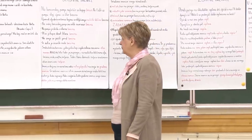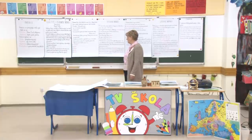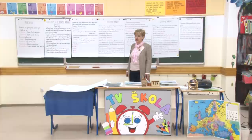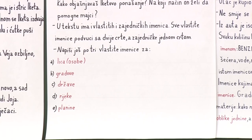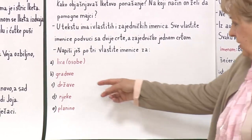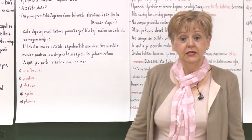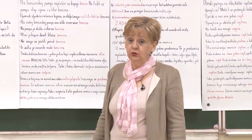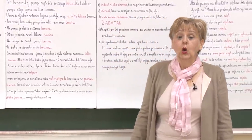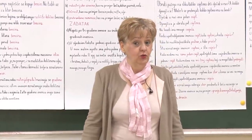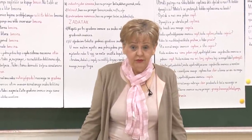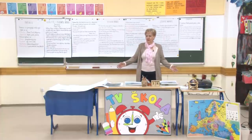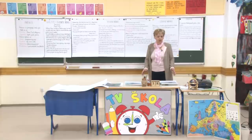Sad imate jedan zadatak vezan za ovu pričicu. Napišite po tri vlastite imenice za lica, gradove, države, rijeke, planine. Neke imenice ćete pronaći u ovom tekstu, a ostale ćete morati pronaći sami. Gradove, države, rijeke, planine - sve smo to radili iz predmeta društvo. Lica imate ih svakodnevno - i u razredu, i u kući - okružuju vas imenice koje označavaju lica. Mama, tata, baba, seka - eto imenica koliko hoćete. Vi izaberte po svom izboru, možete napisati koju više.